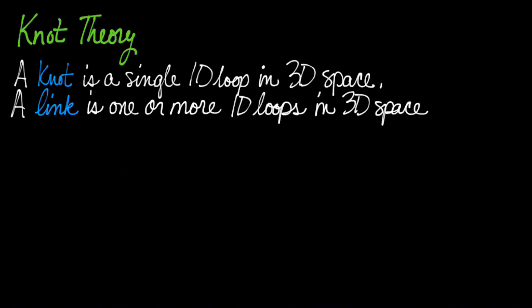So if I have two loops, it's a link but not a knot. However, all knots definitely count as links.